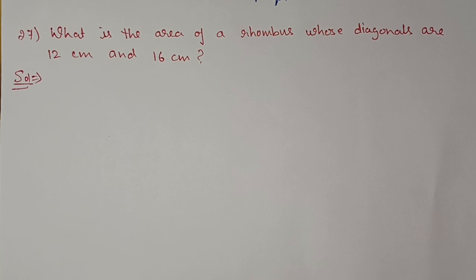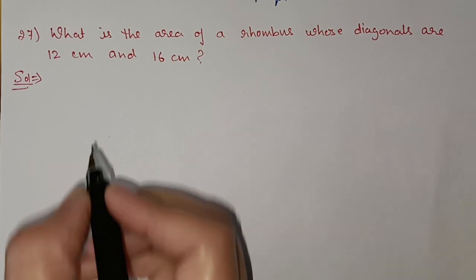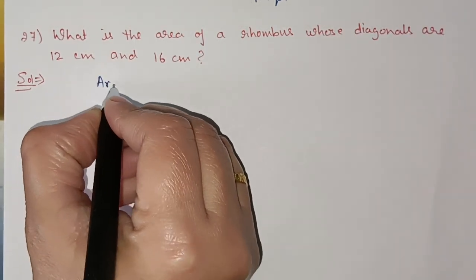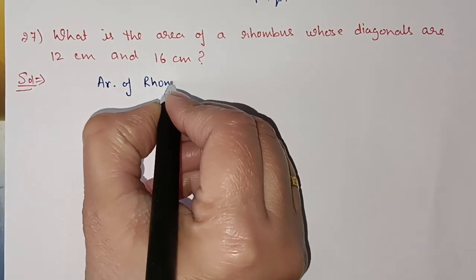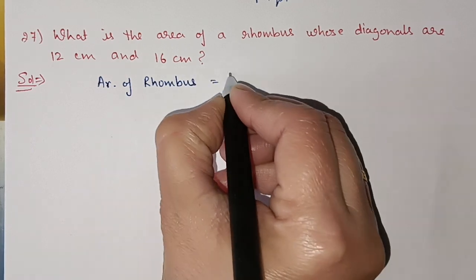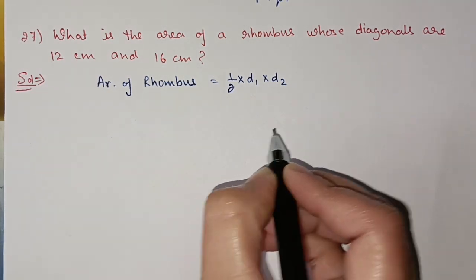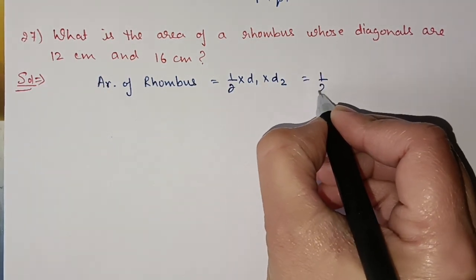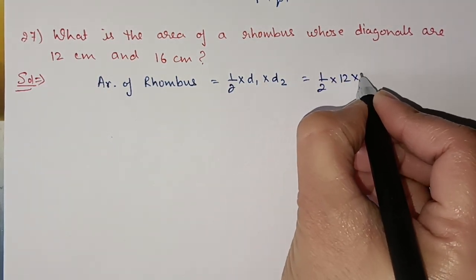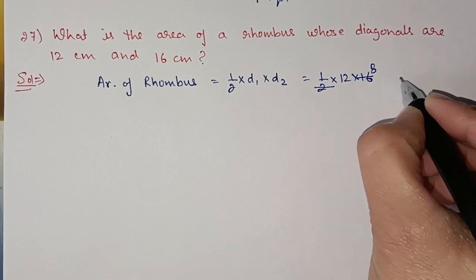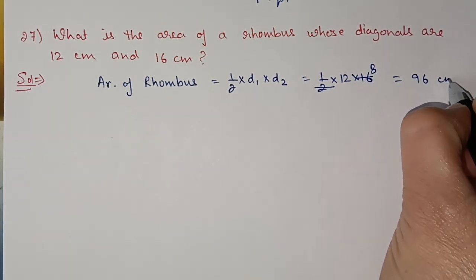Question number 27: what is the area of a rhombus whose diagonals are 12 centimeter and 16 centimeter? When we know the diagonals of a rhombus, area is half D1 into D2. Substituting the values: half into 12 into 16 gives 96 centimeter square.